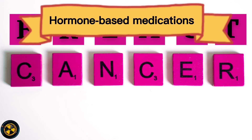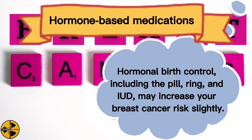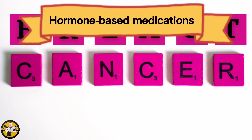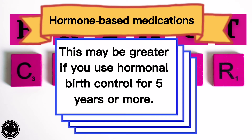Four, hormone-based medications. Hormonal birth control, including the pill, ring, and IUD, may increase your breast cancer risk slightly. This risk may be greater if you use hormonal birth control for five years or more.